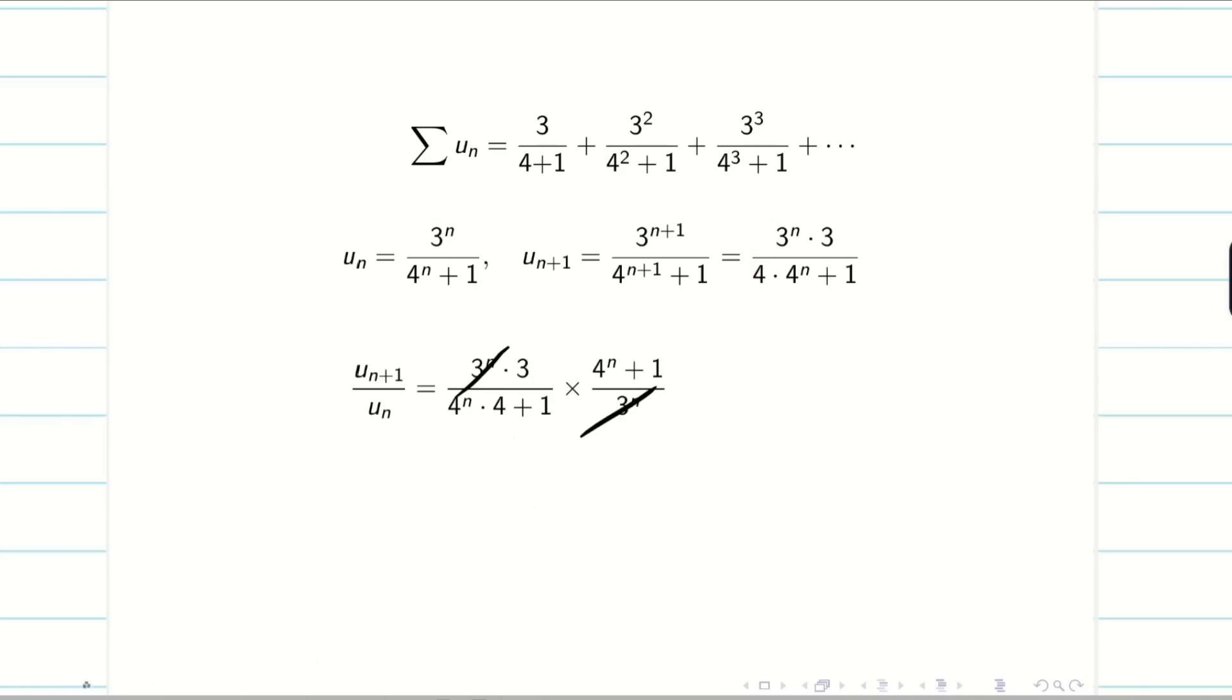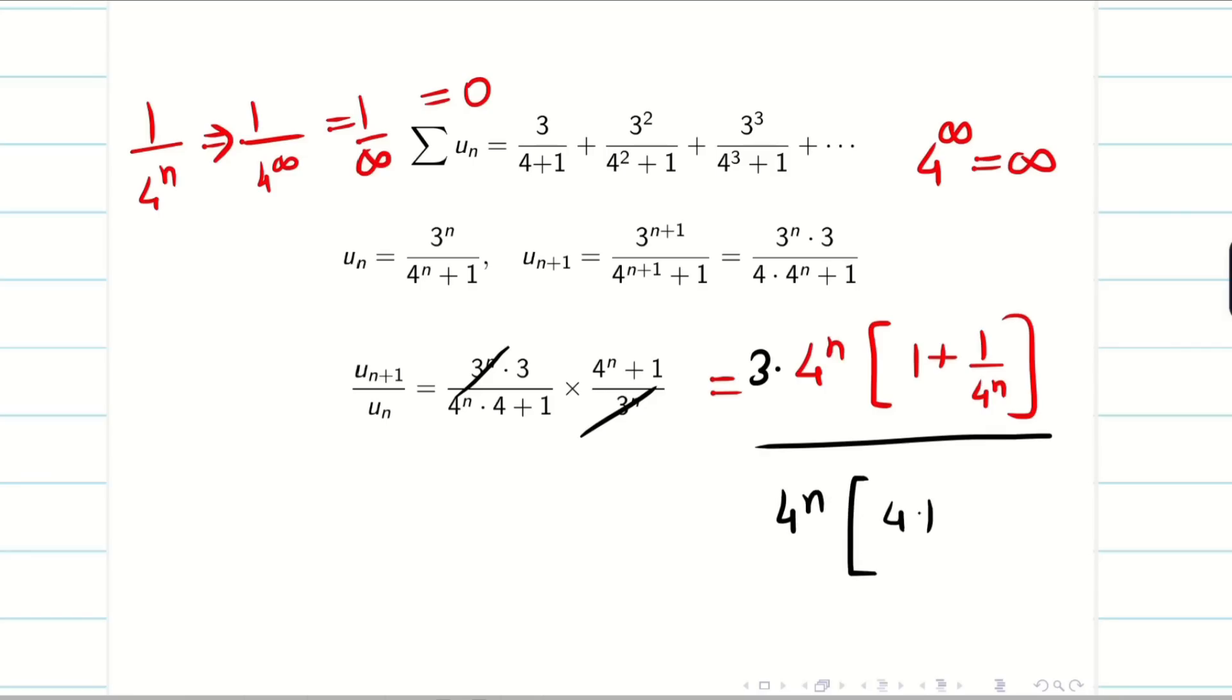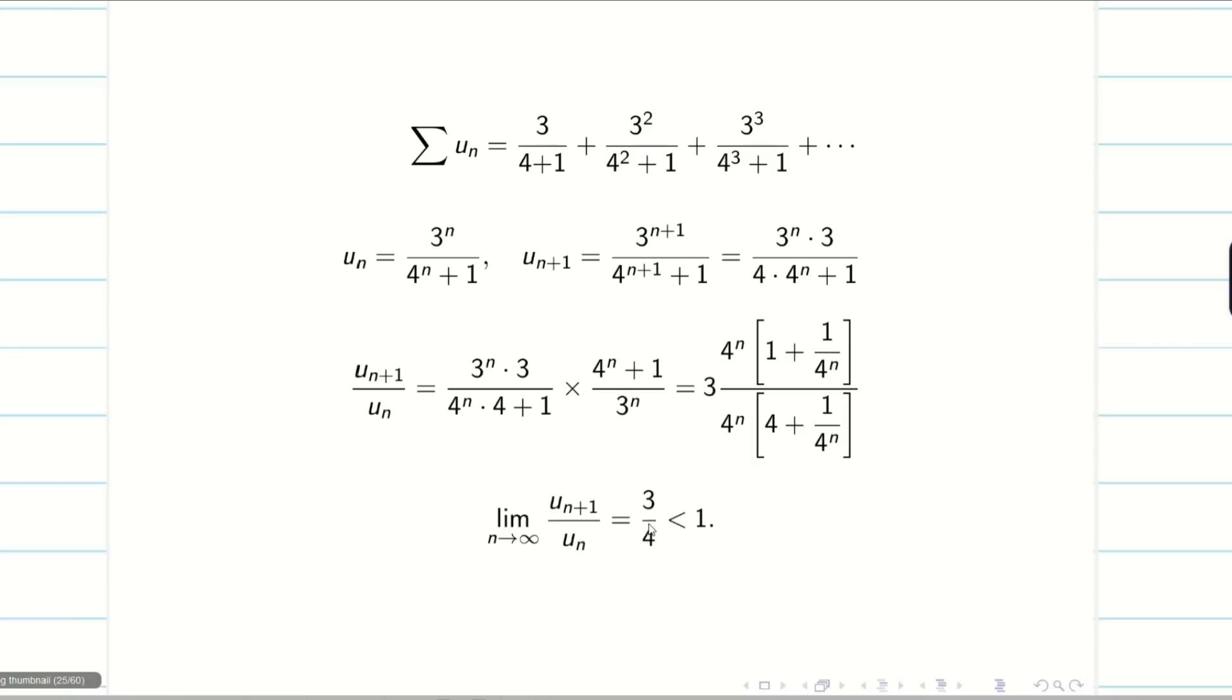Now cancelling 3 power n, and I want to take 4 power n outside because it will create trouble. We know that 4 power infinity is also infinity. So when I have 1 by 4 power n, when applying infinity, we will be getting 1 by 4 power infinity, that is 1 by infinity, it will become 0. And there is one 3 here, all divided by 4 power n in the denominator times (4 + 1/4ⁿ). Now 4 power n cancel. You can see the typed version.